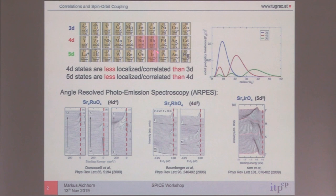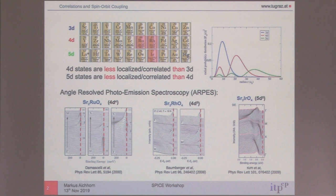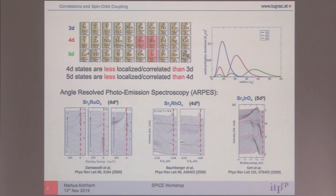There is the rhodate — strontium-2, rhodium-O4 — and there's the iridate, which are basically isoelectronic. If you count electrons like a chemist, they have the same filling — five electrons in the D-shell. So why is the rhodate a metal and the iridate an insulator? Here I want to look at the difference between these two end members and why the rhodate is a metal and the iridate is an insulator.